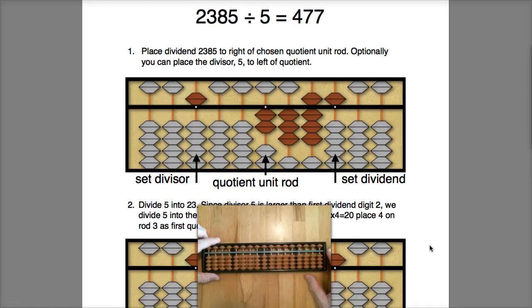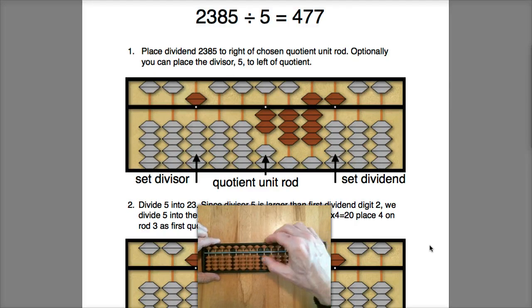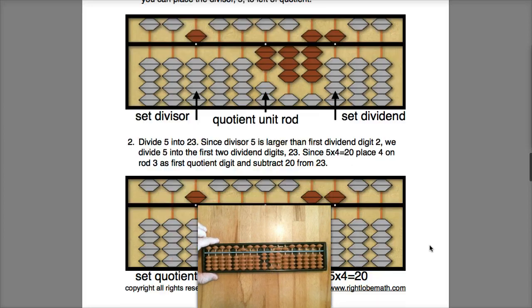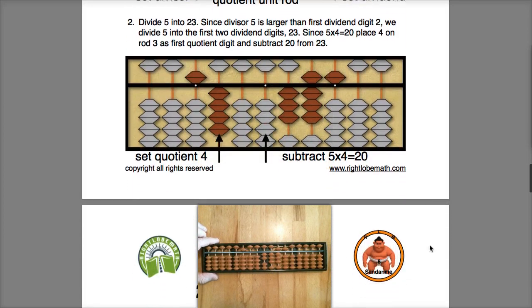Okay, let's take a look at a second example. Here we have 2,385. I'll use the same quotient unit rod and my divisor of 5. All right, well this time 5 can't go into the first dividend digit 2, so I have to take 5 into 23.